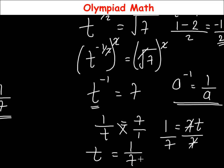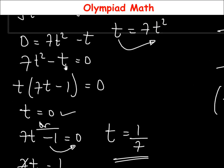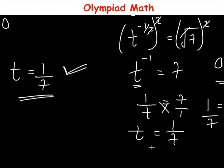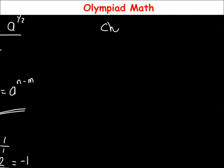We've gotten the values of t. From the first method, we got two values: t equals 0 and t equals 1 over 7. From the second method, we got t equals 1 over 7. Now let's confirm which values satisfy the original equation. The first value is t equals 0 and the second is t equals 1 over 7.